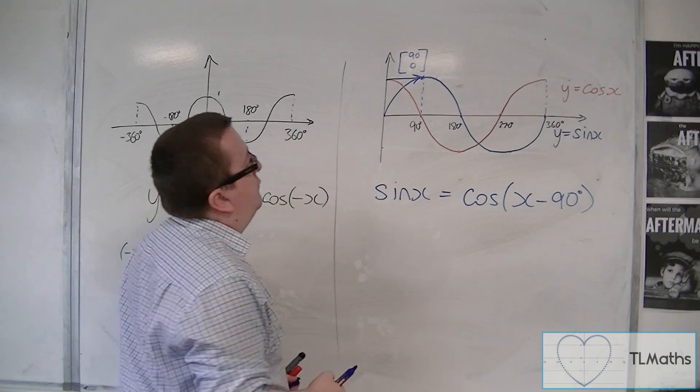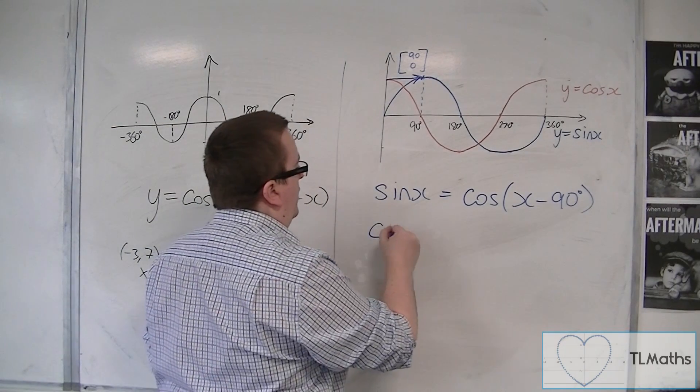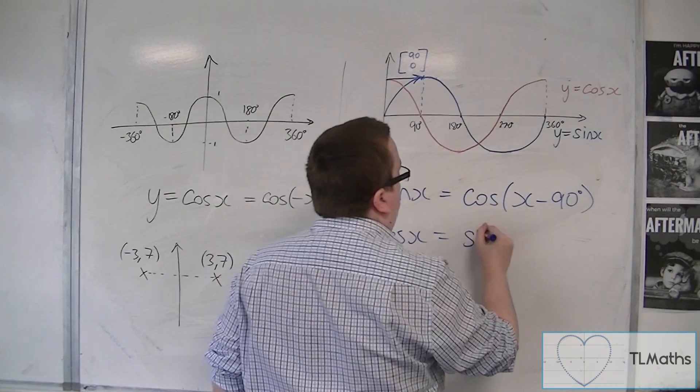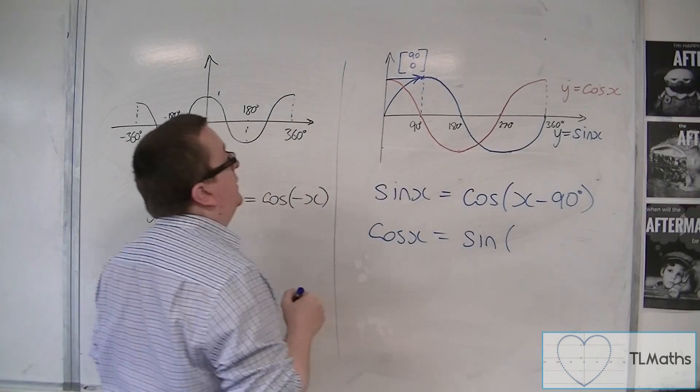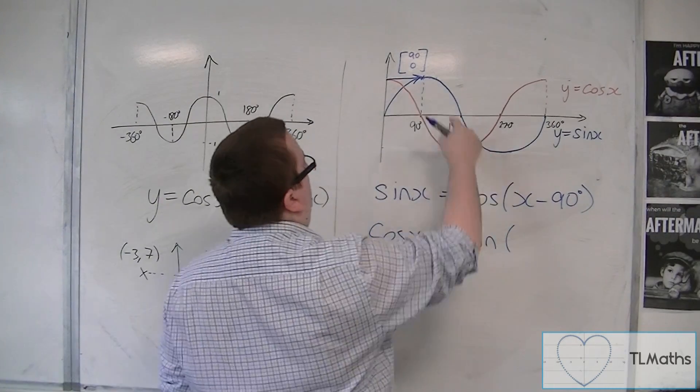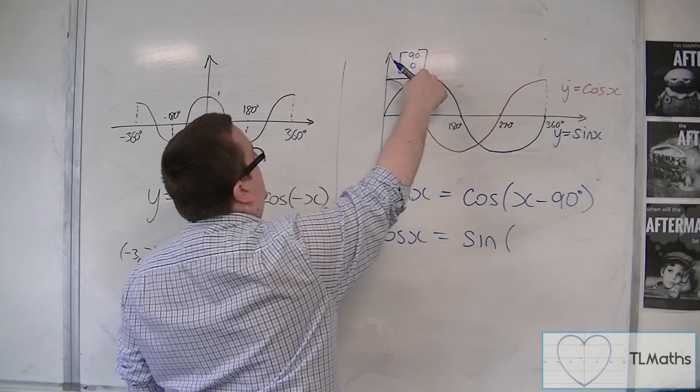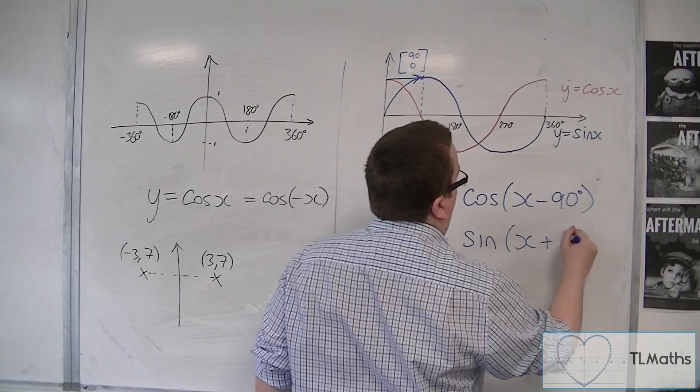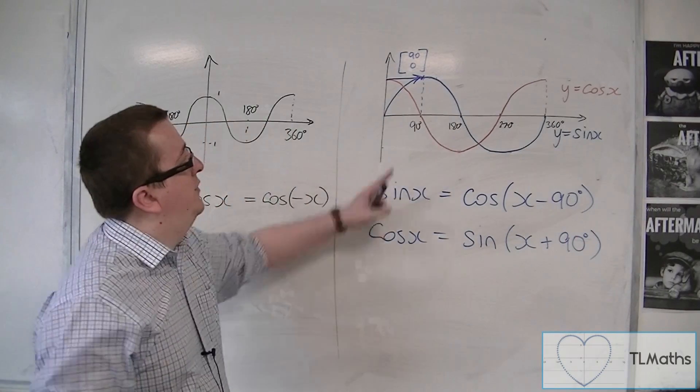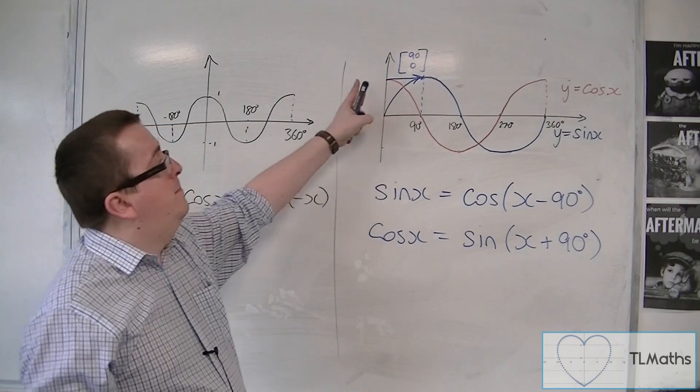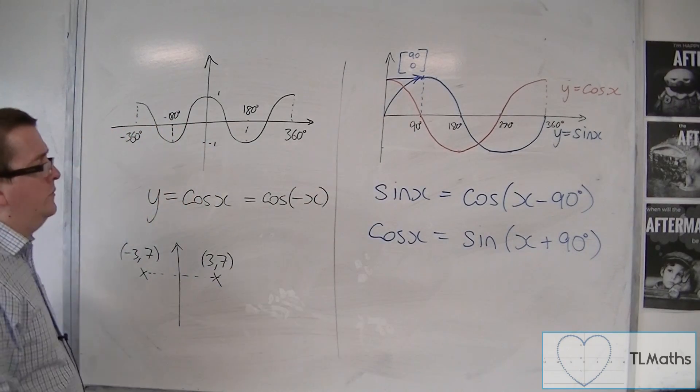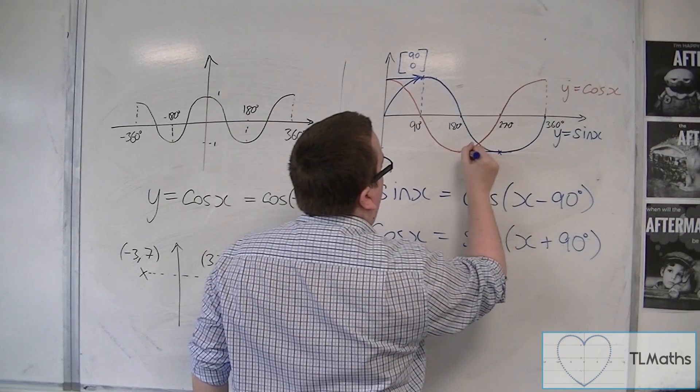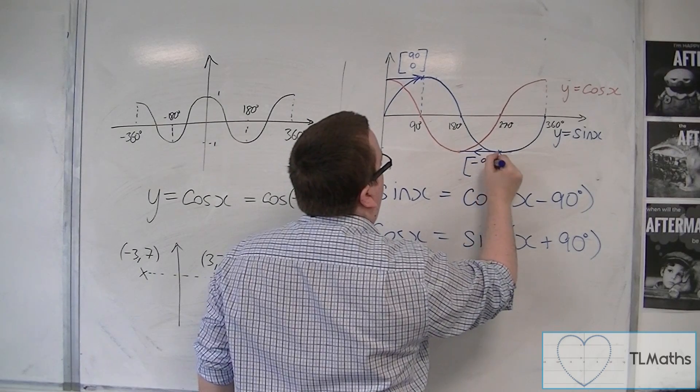We could also do it from the point of view of cos x. How do we get from sine x, rather, now to cos x? Well, to get from sine x, which is the blue line, then we can work backwards the same way. And so, we would have x plus 90. Because that would be a translation by the vector minus 90, 0. You could look at it from that point to that point. So, that would be minus 90, 0.